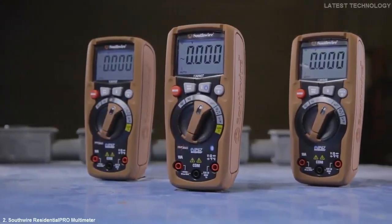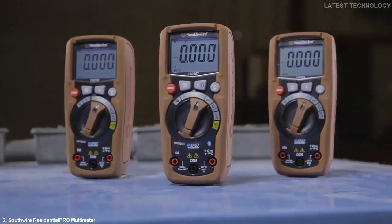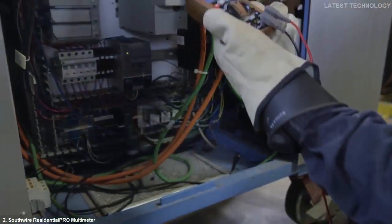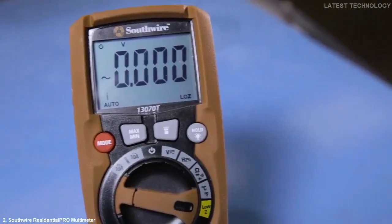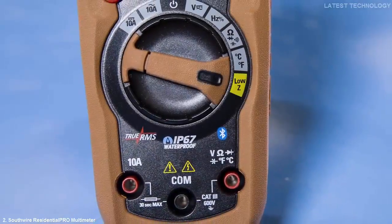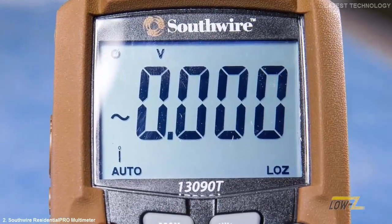Eleven measuring functions, the Southwire 130 Series Residential Pro Multimeters have what it takes to get the job done. A built-in work light adds extra convenience when working in dimly lit areas. Models 13070T and 13090T also offer true RMS readings and low Z for eliminating false readings from ghost voltage.